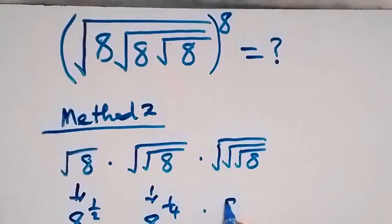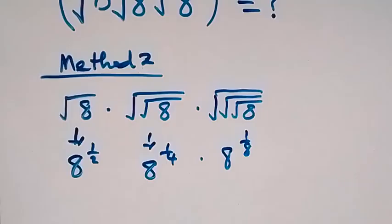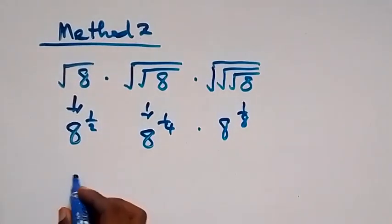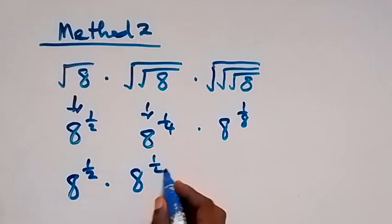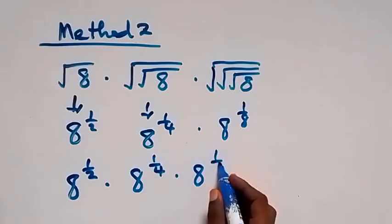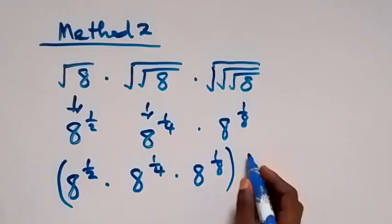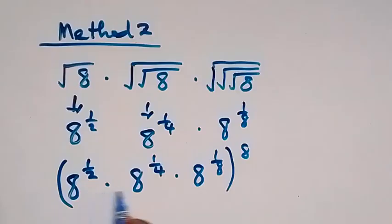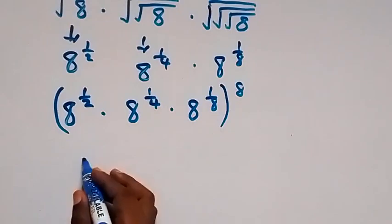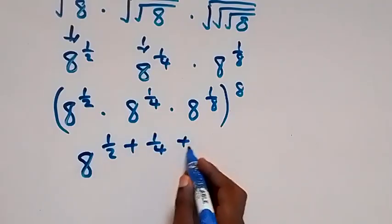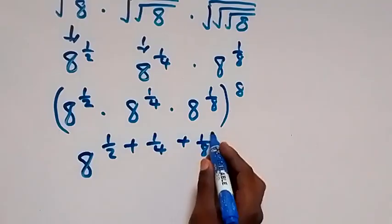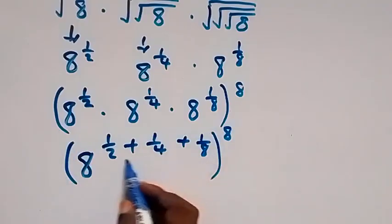Now let's deal with what is inside first. Here we can write this as eight raised to power one over two, then here eight raised to power one over four, and here eight raised to power one over eight. When we bring it together, this is the same as eight raised to power half, times eight raised to power one over four, times eight raised to power one over eight, all raised to power eight. Since we have the same base of eight, we sum the powers together.